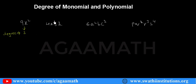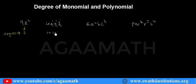Now if I see here, I have three variables in the term 4xyz. The powers of these variables are each 1. So we have to find the sum of the powers of all the variables: 1 plus 1 plus 1. The degree is 3.